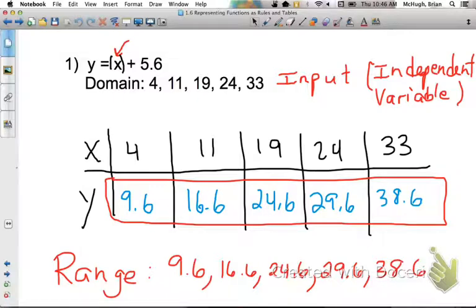Those are the values that make up our range, and those are the values of the dependent variable, which is, in this case, y. y is now called the dependent variable.